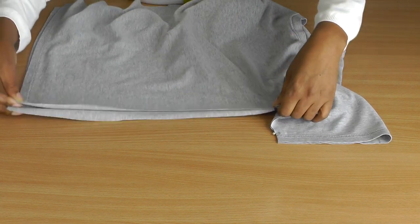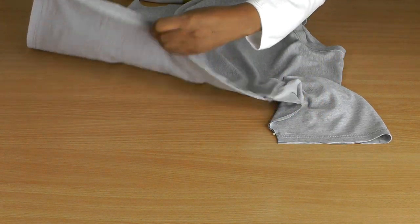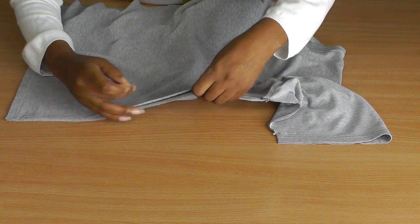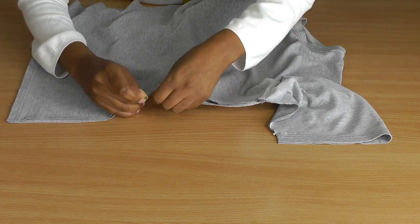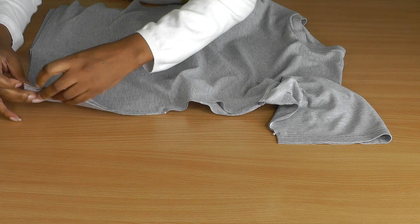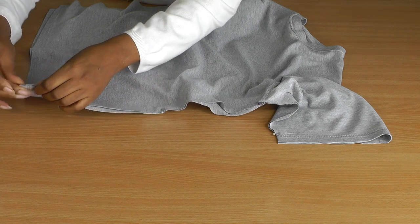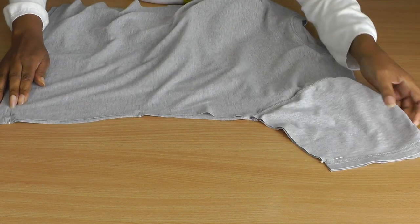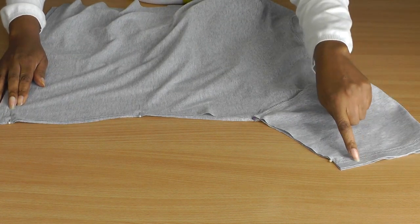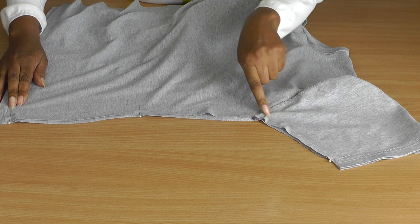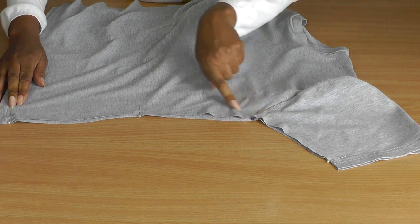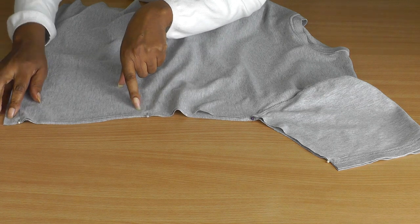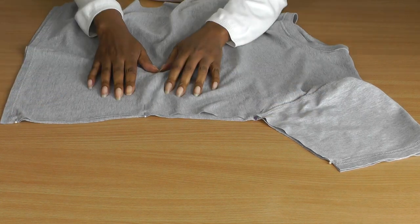And I'm going to put one at the waistline. And then just one at the bottom. And then I do the same on the other side. So there we have the sleeve and I pinned it at the underarm, to the waistline, and then to the hemline. And then I'm going to take that to my sewing machine.